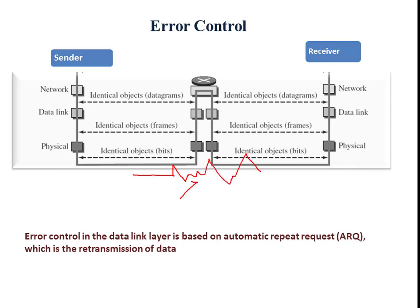Error occurs when we transmit the signal over a transmission medium. Due to external disturbances, signal loss leads to errors at the receiver side. Once corruption in the received packet is found, it must be corrected.